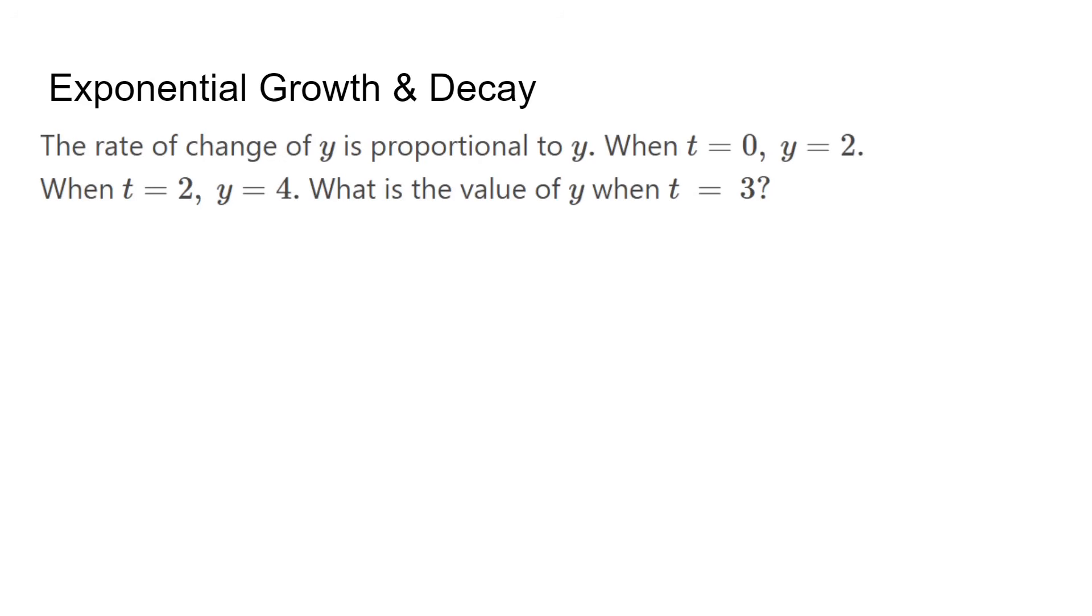We will be given one to two points and the exponential growth equation, as shown in this problem. We have the points 0, 2 and 2, 4, so c equals 2. We plug in 2, 4 to the equation and solve for k. We plug this in again to the base exponential growth equation and plug in t equals 3 to find our final answer.